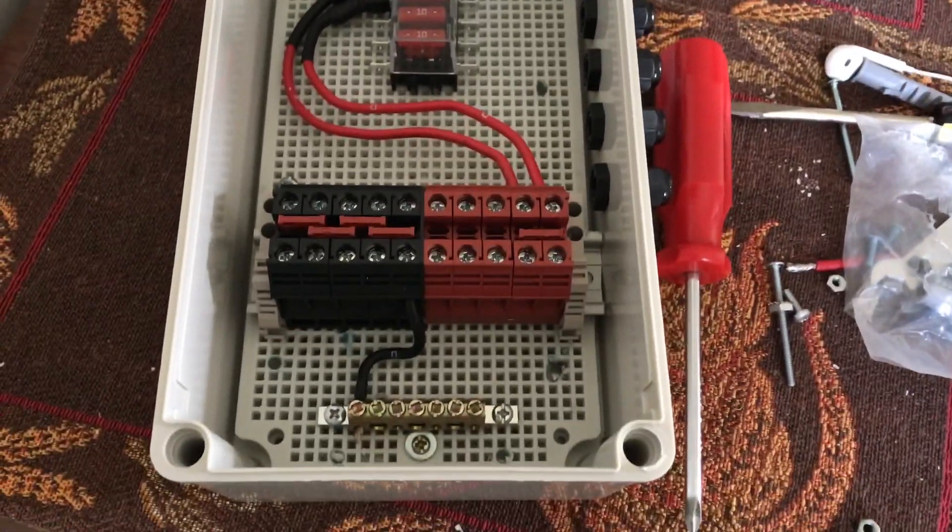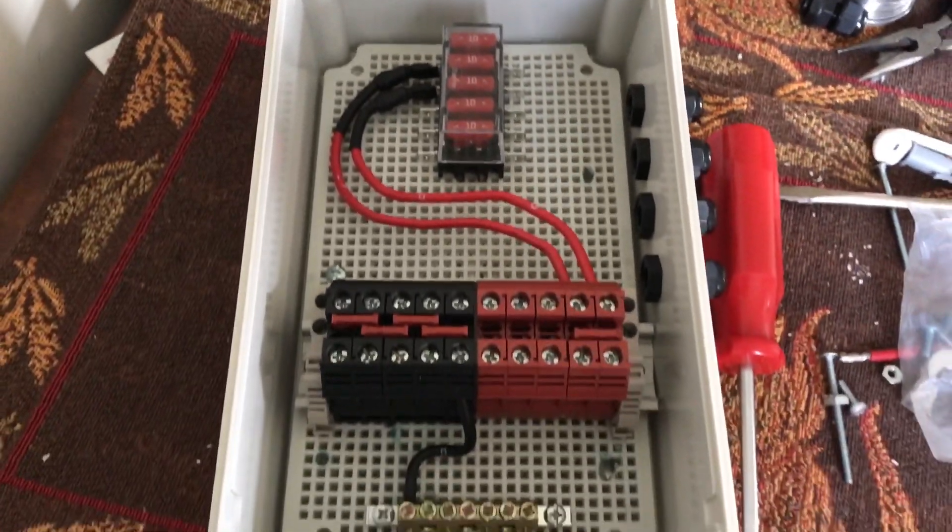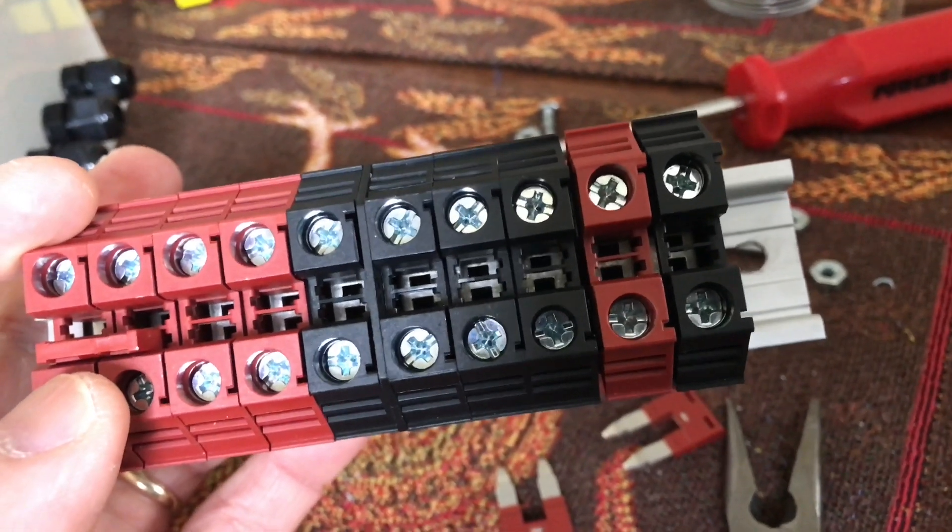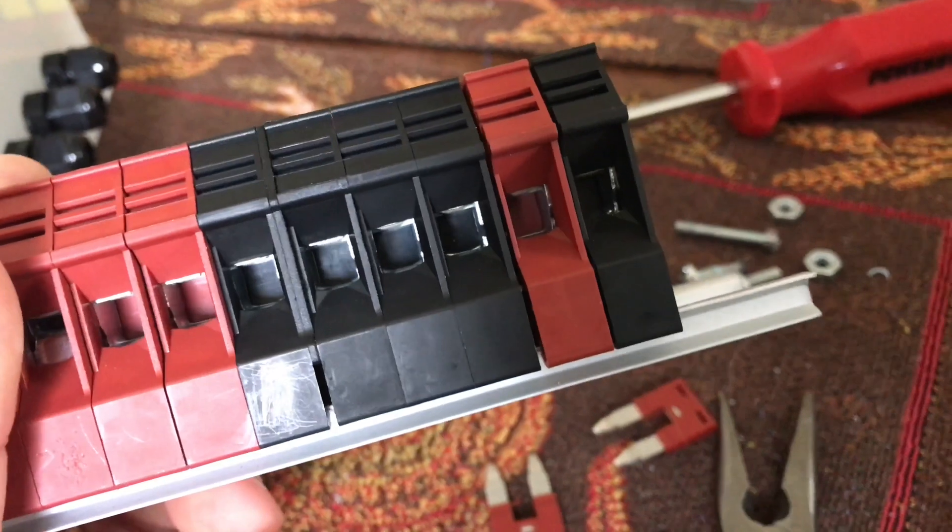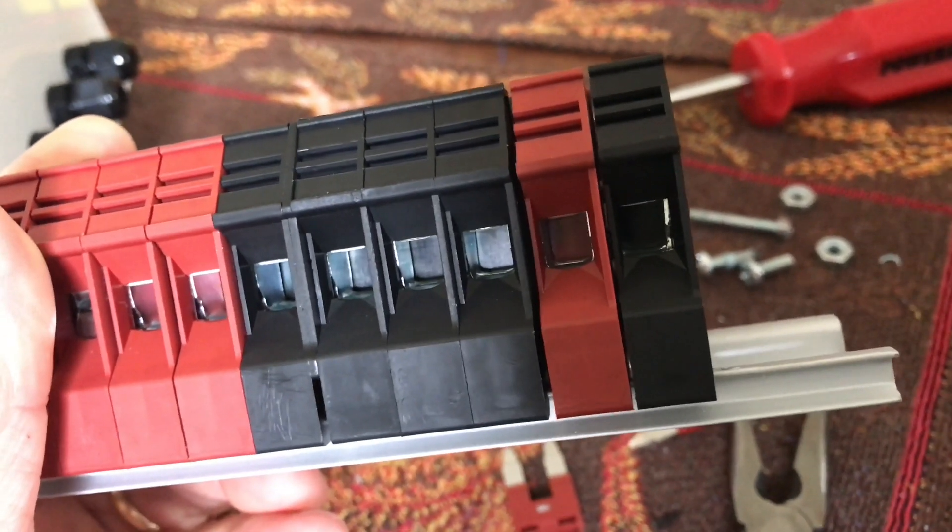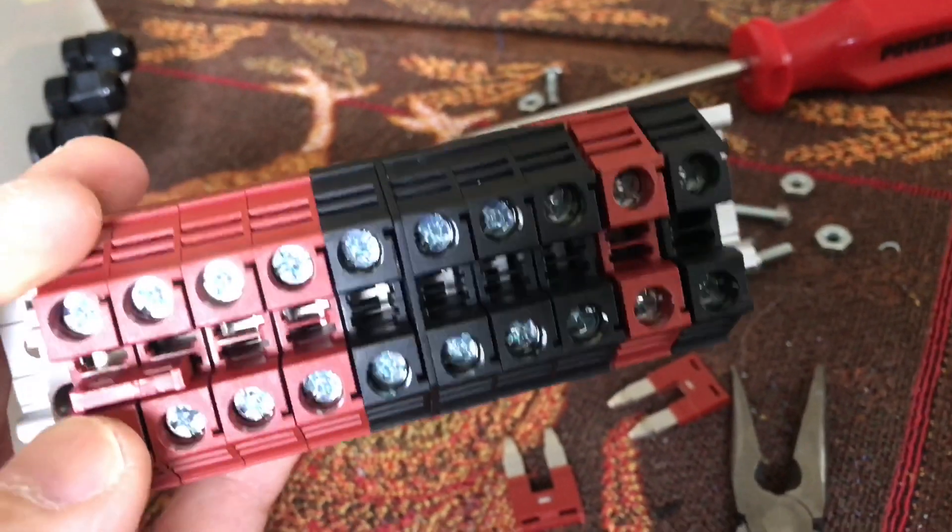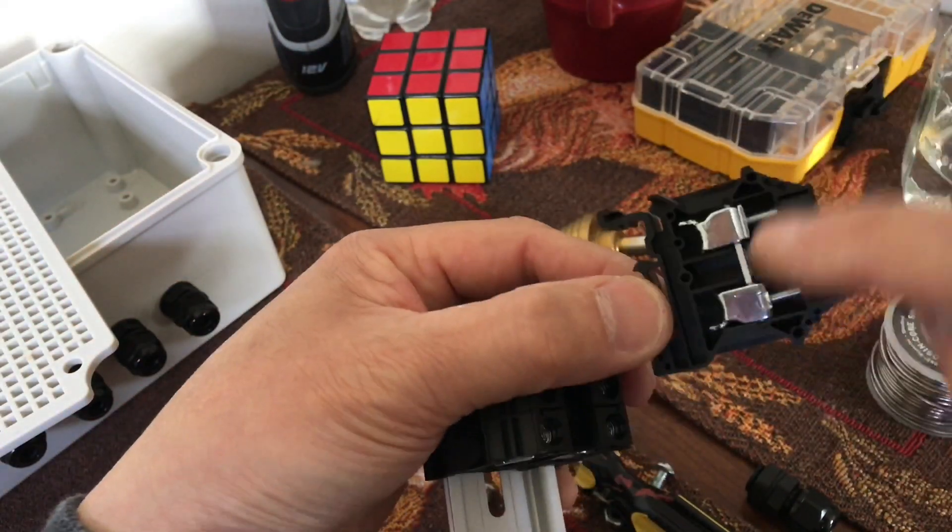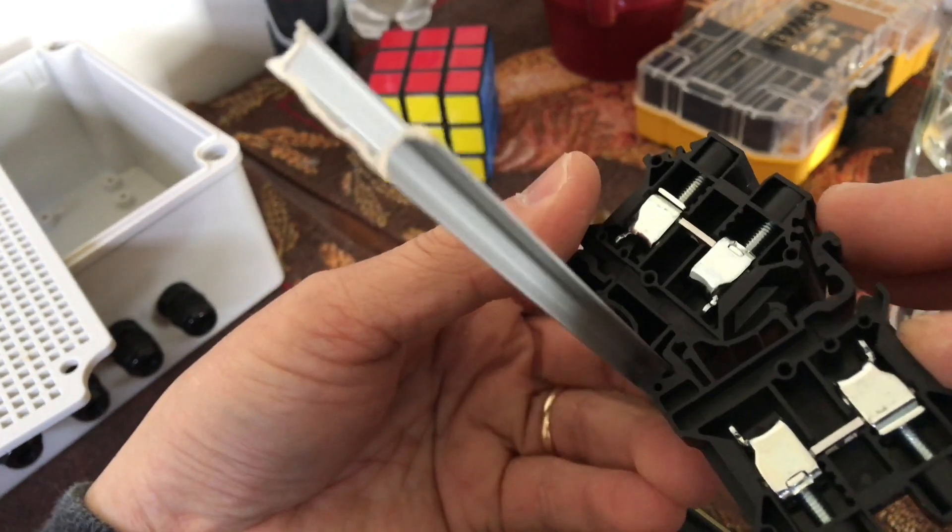This Dinkle assembly kit is rated 60 amp and could take wires from 6 gauge down to 20 gauge, and it's rated 600 volts. Pretty cool. One side is protected, the other one is open, and again it just snaps in place.